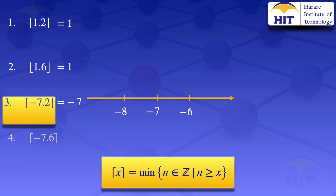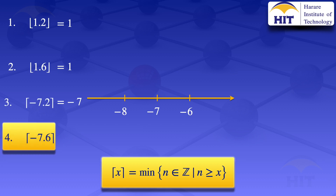Moving on to number 4, the ceiling value of minus 7.6. We are looking at the minimum integer that is not less than minus 7.6. Integers that are not less than minus 7.6 are integers to the right of minus 7.6: minus 7, minus 6, and so on. For the ceiling value, we take the smallest of those integers, which is minus 7. So the ceiling value of minus 7.6 is minus 7.